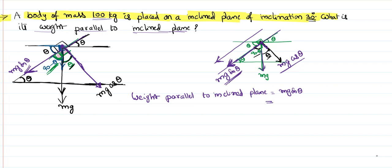Mass is given as 100 kg. To keep the calculation simple, I take g as 10 m/s². The angle of inclination is 30 degrees, and sin 30 equals one-half. So weight parallel to inclined plane = 100 × 10 × sin 30 = 1000 ÷ 2 = 500 newtons. The component of weight parallel to the inclined plane is 500 newtons.